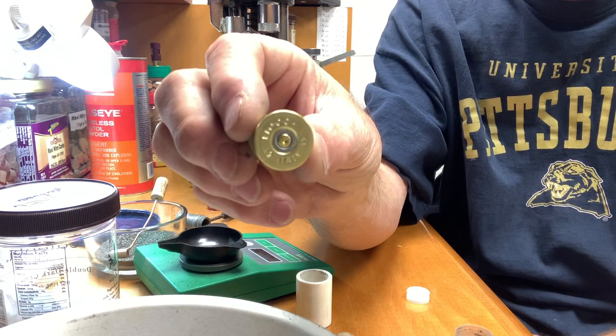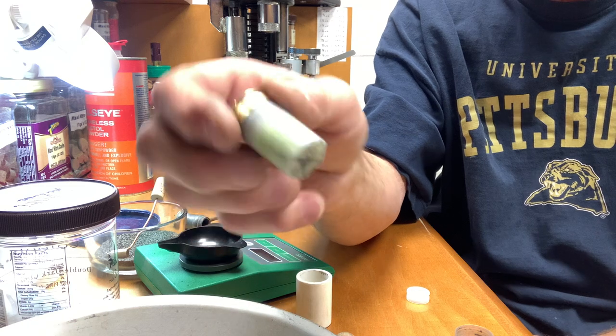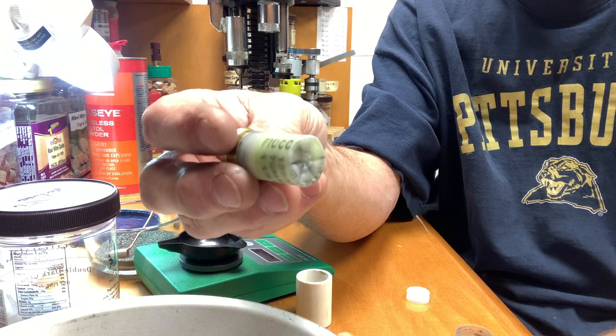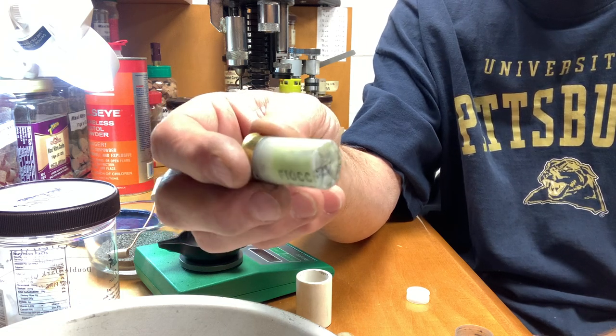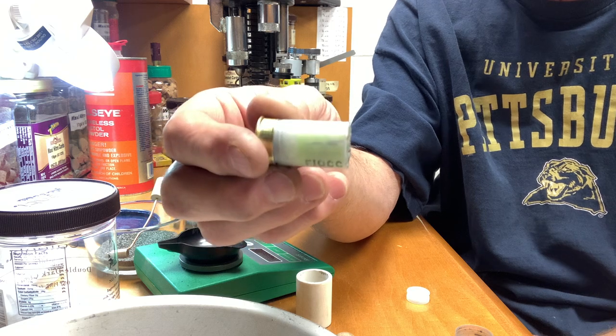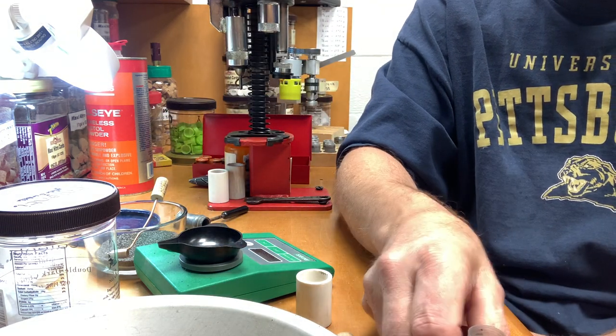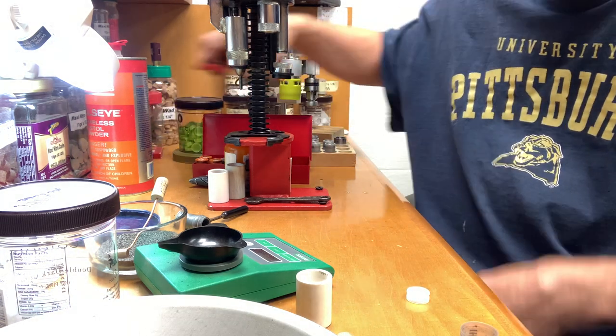And I wanted to load BBs. This is a 9/16th ounce BB load. This is my mock-up load but it has real powder, but there's not a real primer in there. But there's 9/16ths ounce of BBs in here, 245 to 250 grains of BBs. So here I'll show you making one and we'll go from there.